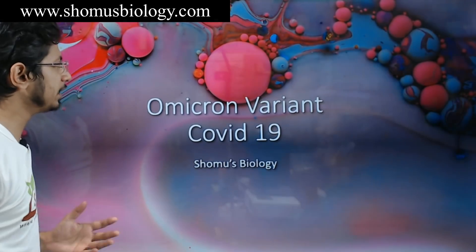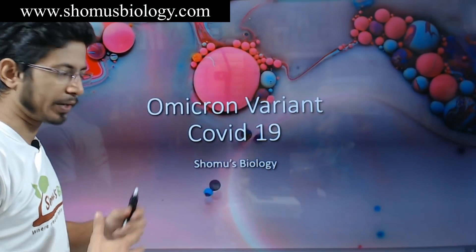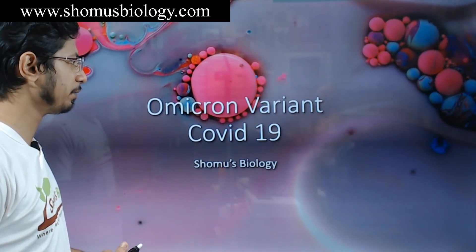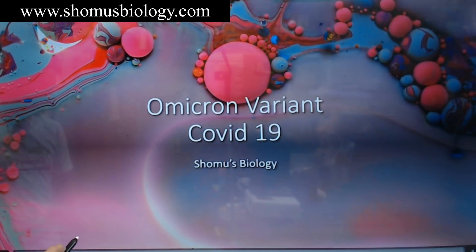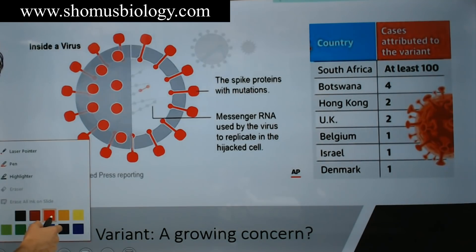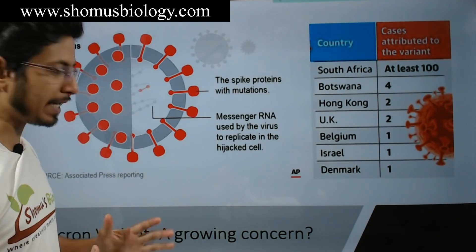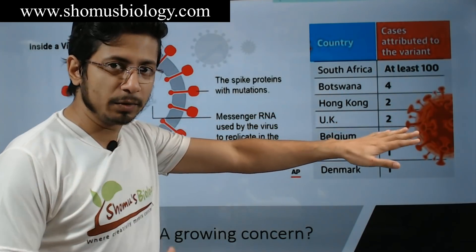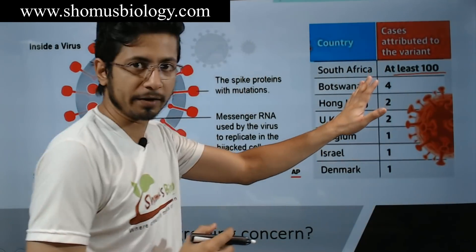You have probably heard in the news that this Omicron variant is spreading. It started from South Africa and is spreading in different parts of the world. Let me move to the next slide and explain what we mean by this Omicron variant. This is a newly found variant and it is found in at least 100 individuals affected in South Africa.